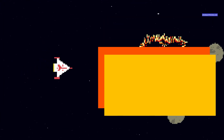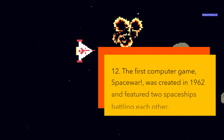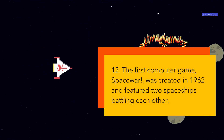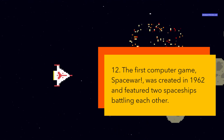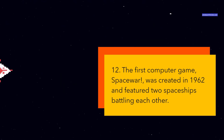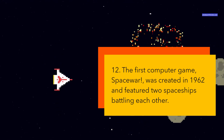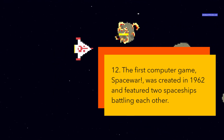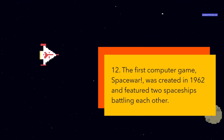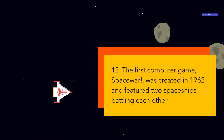The first computer game, Spacewar, was created in 1962 and featured two spaceships battling each other. Spacewar was one of the earliest video games ever made and the first to be widely played on computers. It was created by Steve Russell and his colleagues at the Massachusetts Institute of Technology, MIT, in 1962. The game featured two spaceships, called The Needle and The Wedge, that could shoot torpedoes at each other while avoiding the gravity of a central star. The game was programmed on a PDP-1 computer, which had a cathode ray tube, CRT, display that could show graphics and sound.